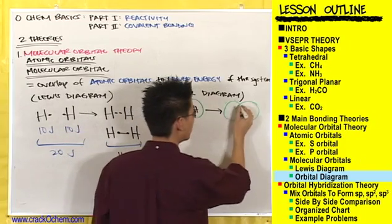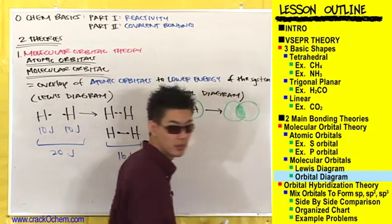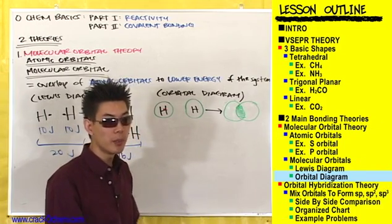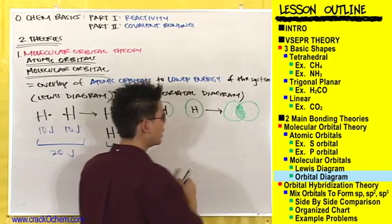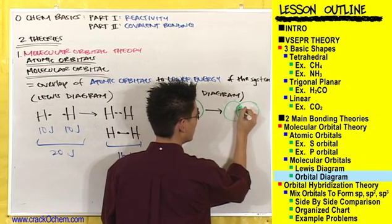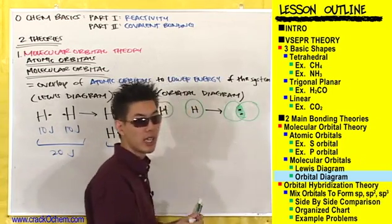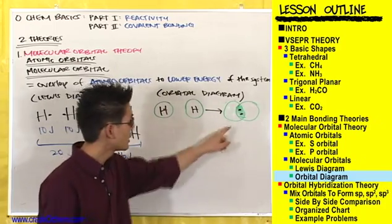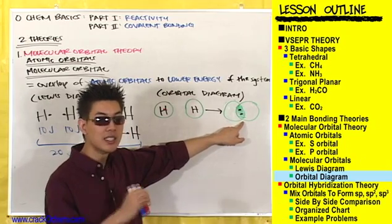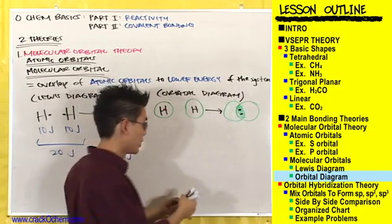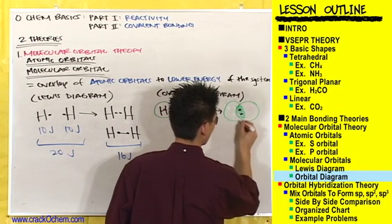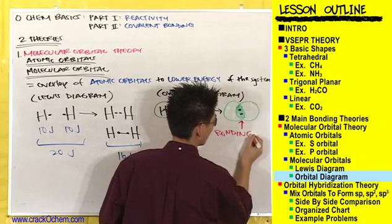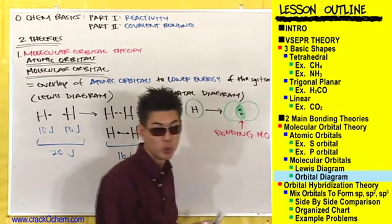The area of overlap in between them right here - this is the bond. They're sharing electrons. There are two valence electrons hanging inside that overlapping region. Another name for this area of overlap is the bonding molecular orbital - the bonding MO, the bonding molecular orbital.